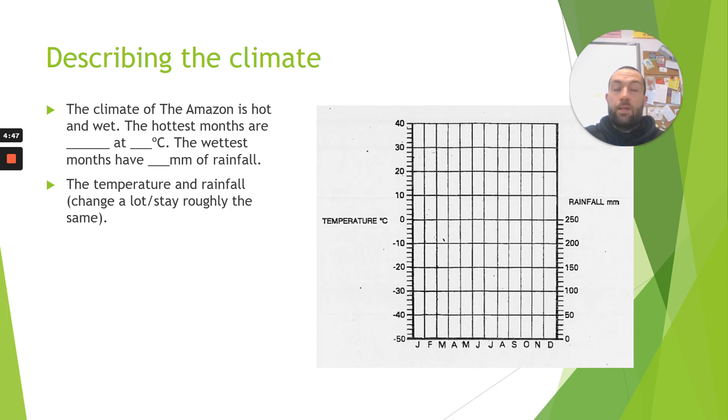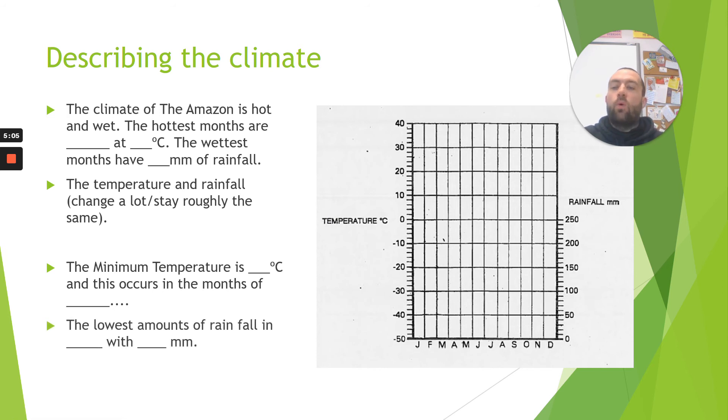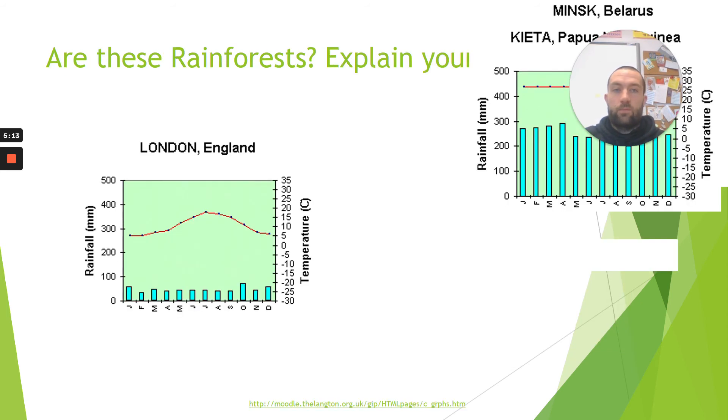The minimum temperature is whatever it is. So what's the lowest temperature and occurs in the months of... and then when that happened using this bit along the bottom, again it can be more than one month. And the lowest amounts of rainfall were in what month was it and how much rainfall happened in the months. So that is our description.